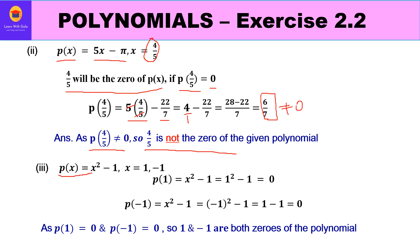For part three, p(x) = x² - 1, verify whether 1 and -1 are zeros: p(1) = 1² - 1 = 0; p(-1) = (-1)² - 1 = 1 - 1 = 0. Since both p(1) and p(-1) equal 0, both 1 and -1 are zeros of the polynomial.